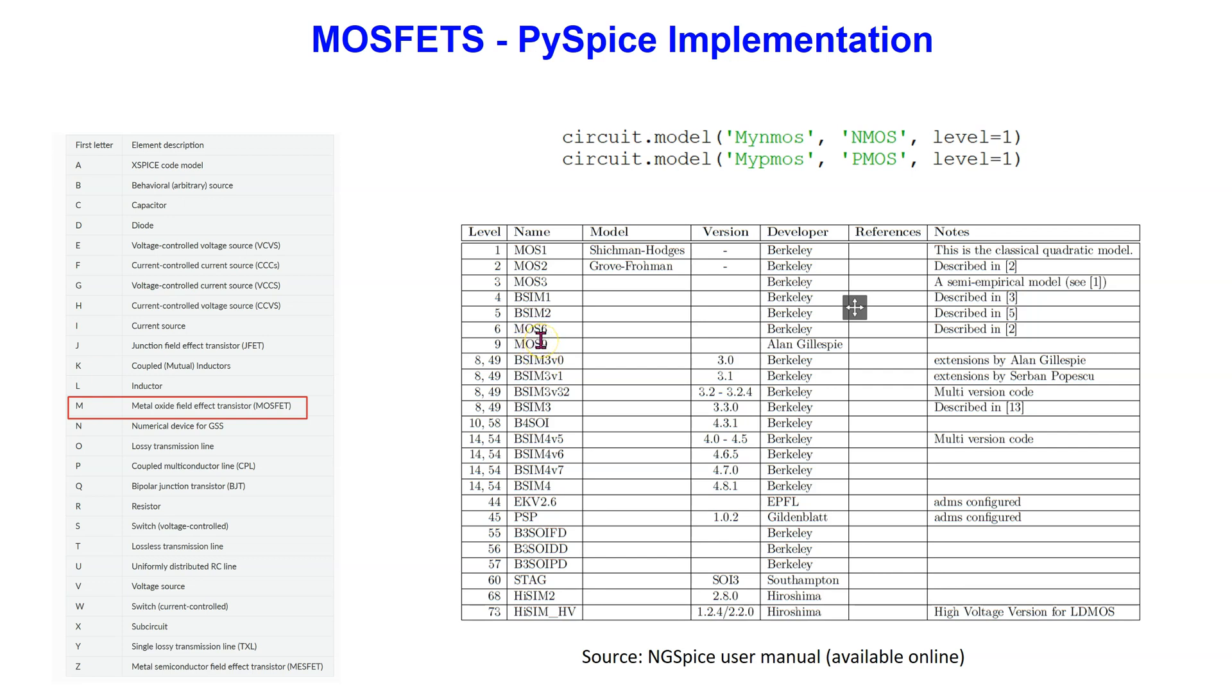BSIM, which stands for Berkeley Short-channel Insulated Gate Field Effect Transistor, refers to a family of MOSFET models for integrated circuit design. Many other MOSFET models for integrated circuits are also available, and these are mostly empirical models. In PISPICE, the models can be selected using the syntax shown here by choosing the appropriate level.